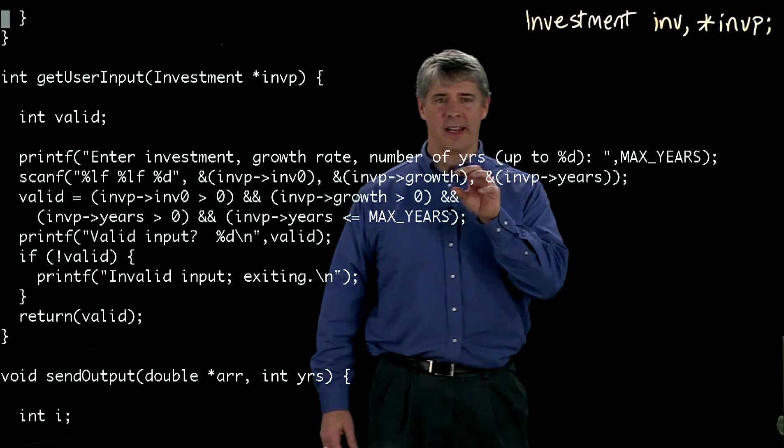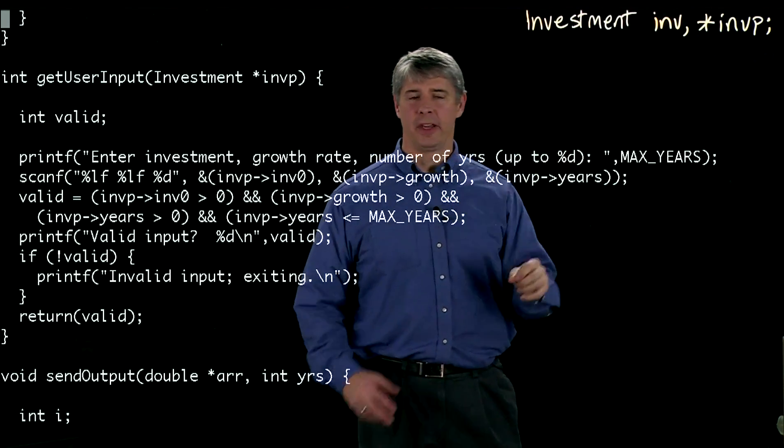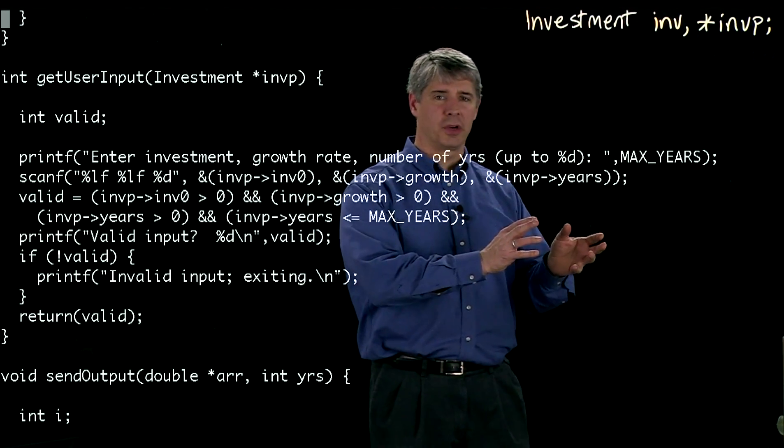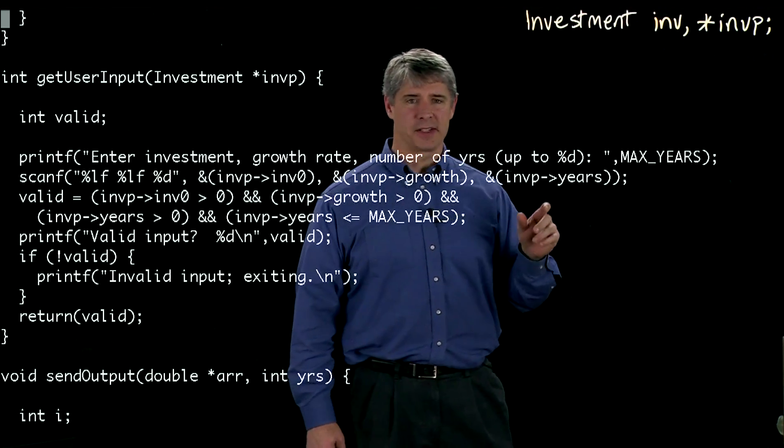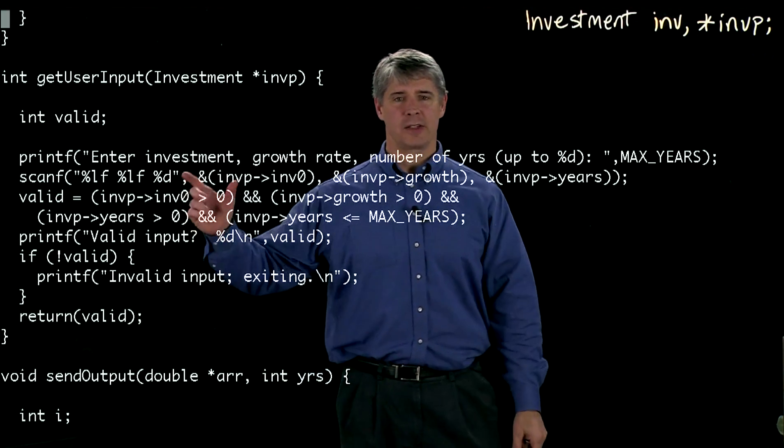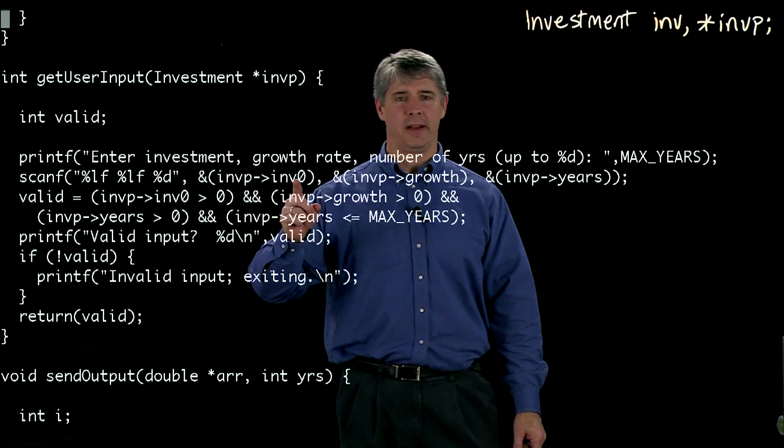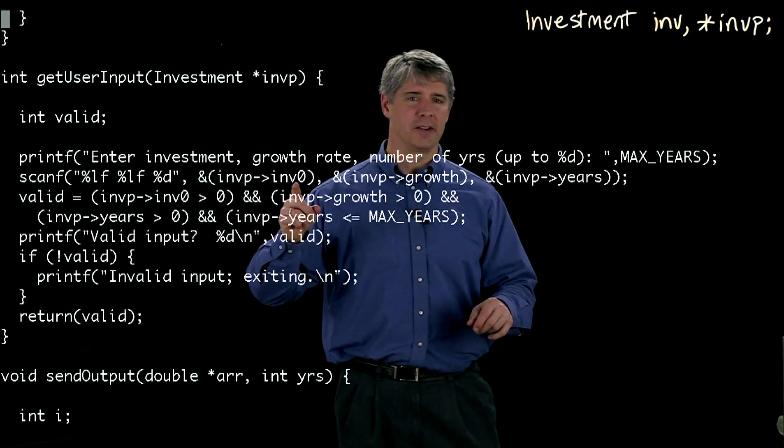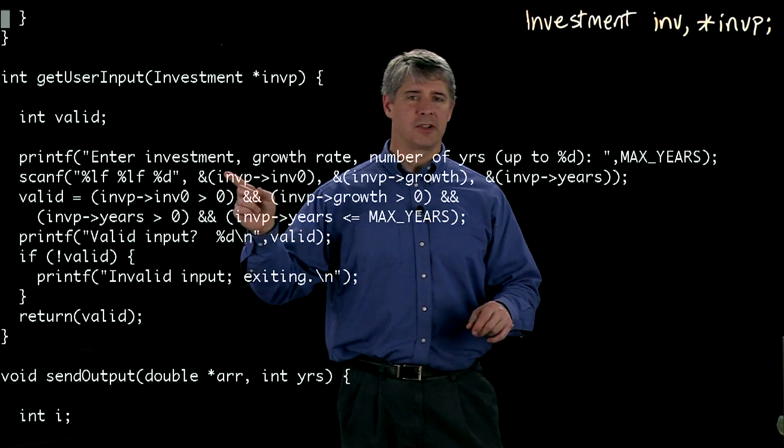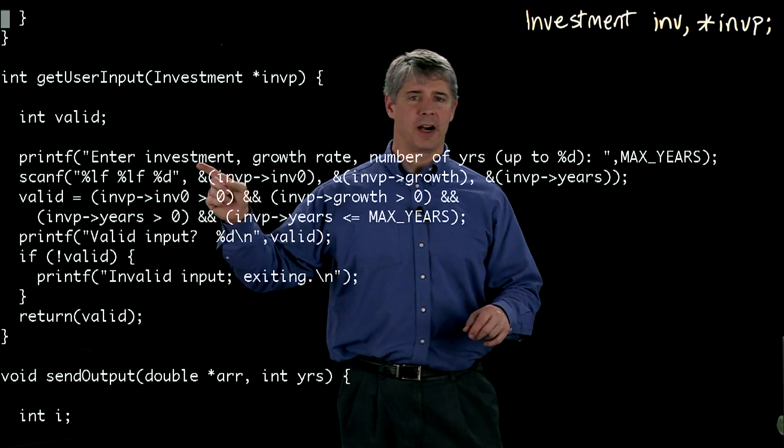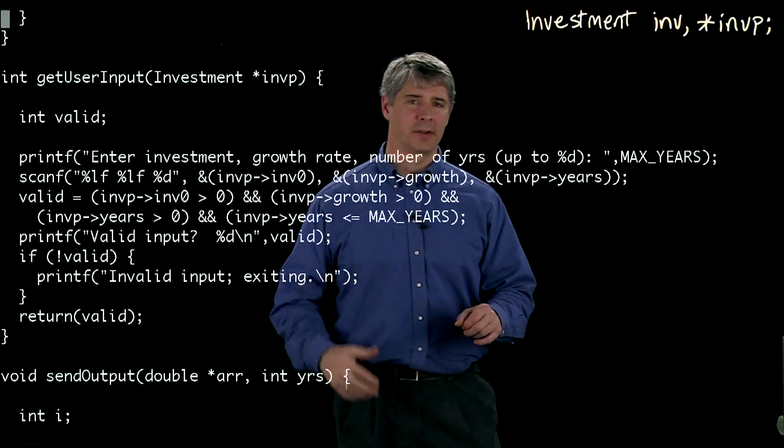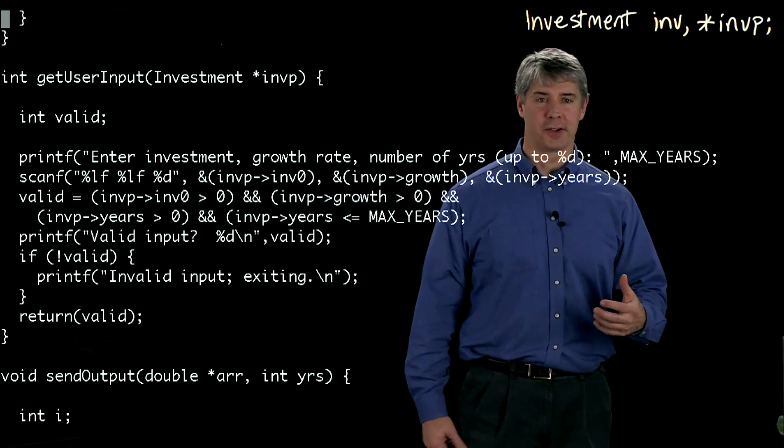Now for it to put that data into the right place in memory where your variable is stored, it needs to know the address of those variables. And so that's why here where you say inv p arrow inv zero, what you're doing then is you're taking the address with this reference operator. Remember the ampersand returns to us the address or a pointer to that.